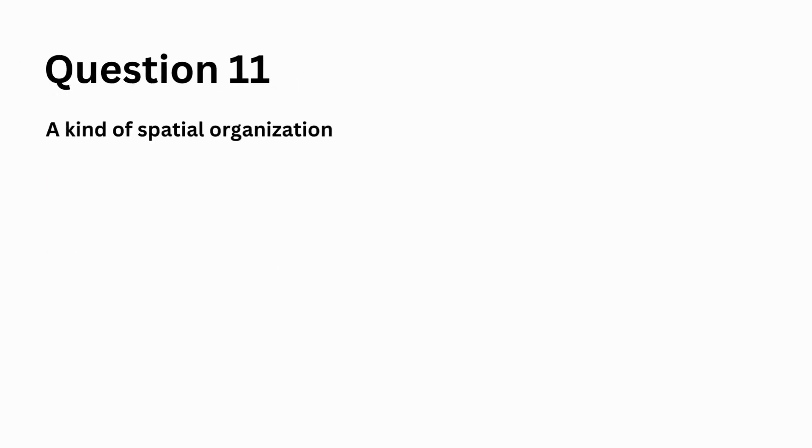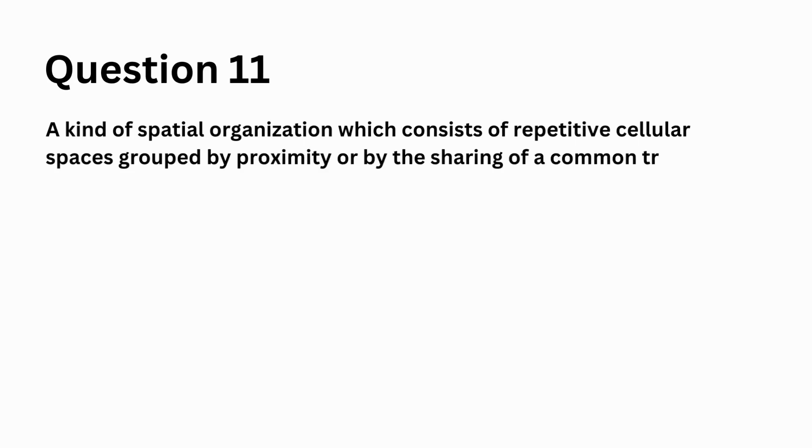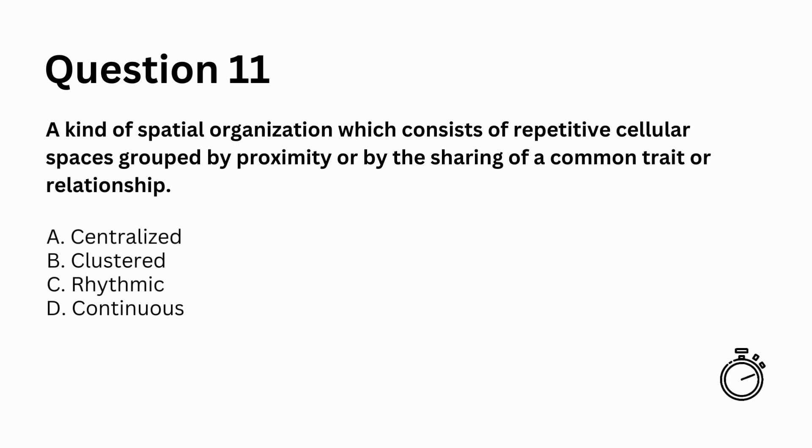A kind of spatial organization which consists of repetitive cellular spaces grouped by proximity or by the sharing of a common trait or relationship. A. centralized, B. clustered, C. rhythmic, D. continuous. Answer: B. clustered.